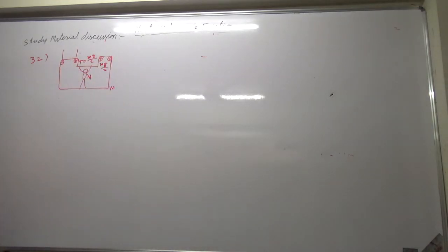Now write the forces on the man. What are the different forces? Mg by 2, Mg by 2. So by solving this, we can say the normal force will be zero.